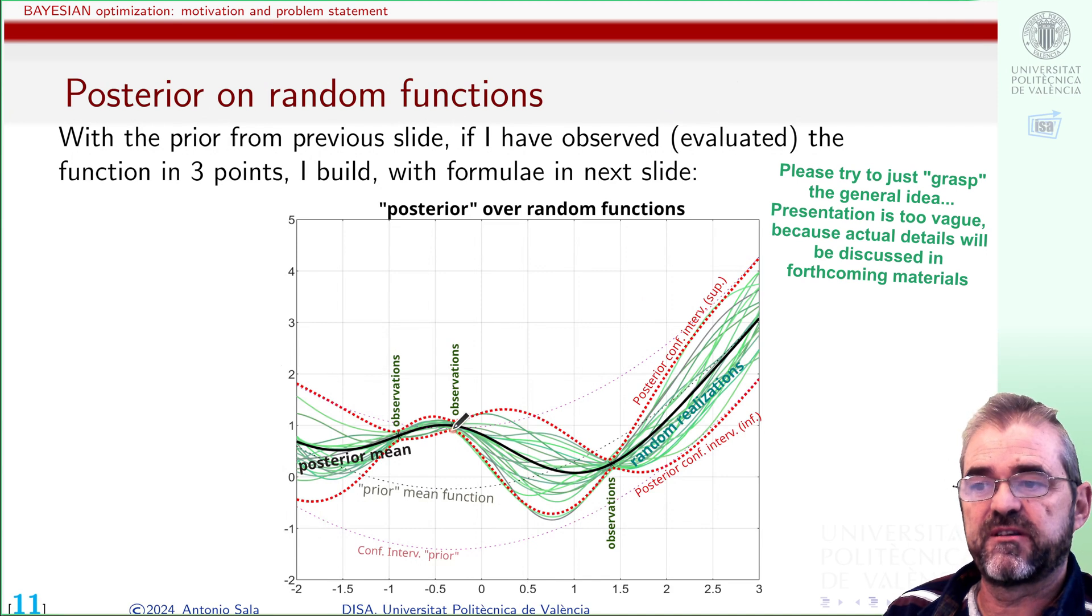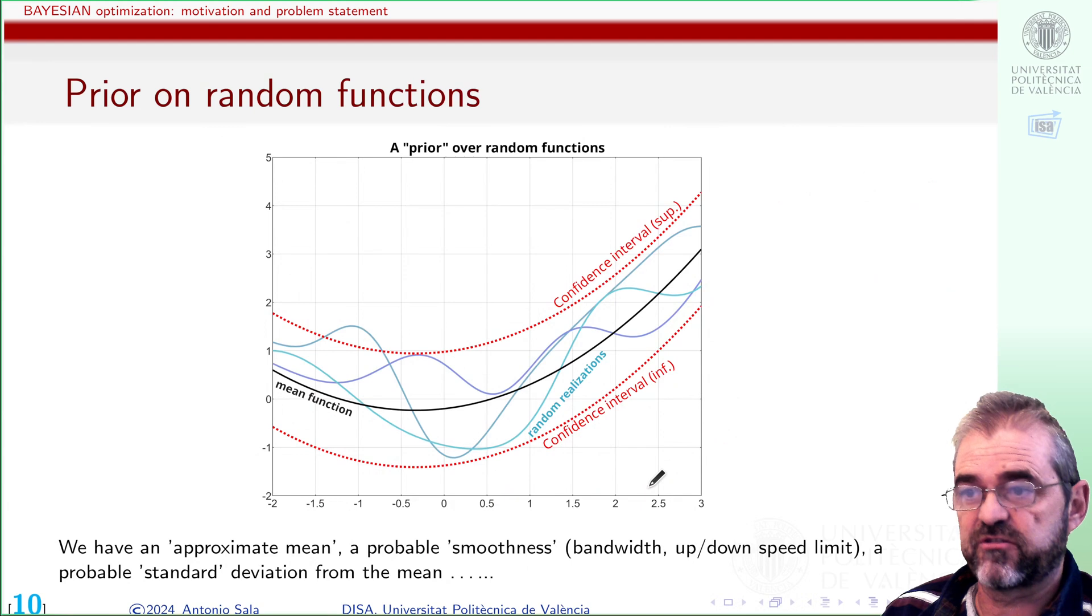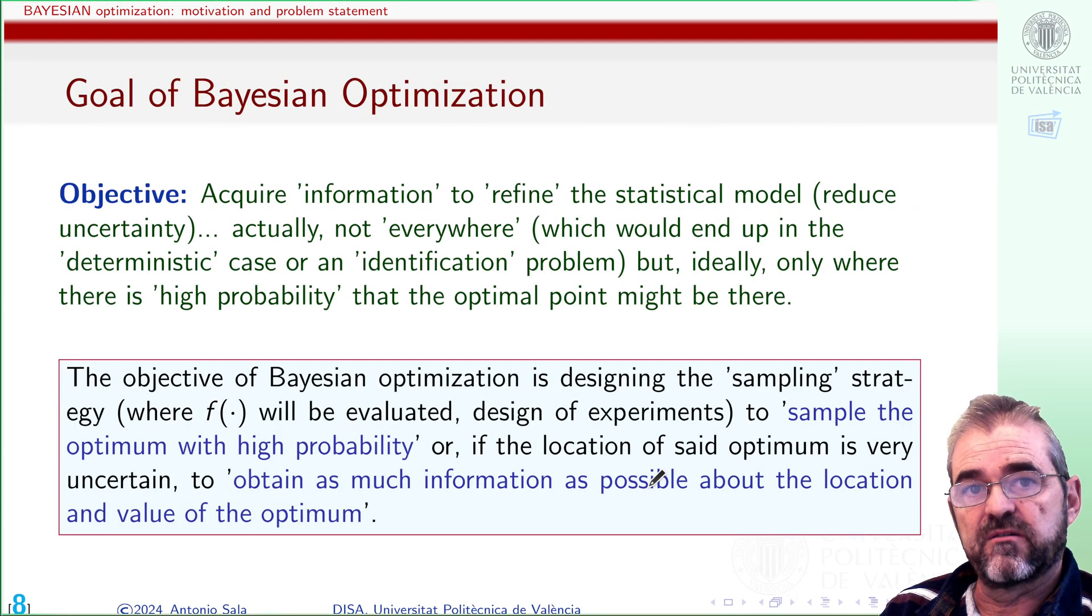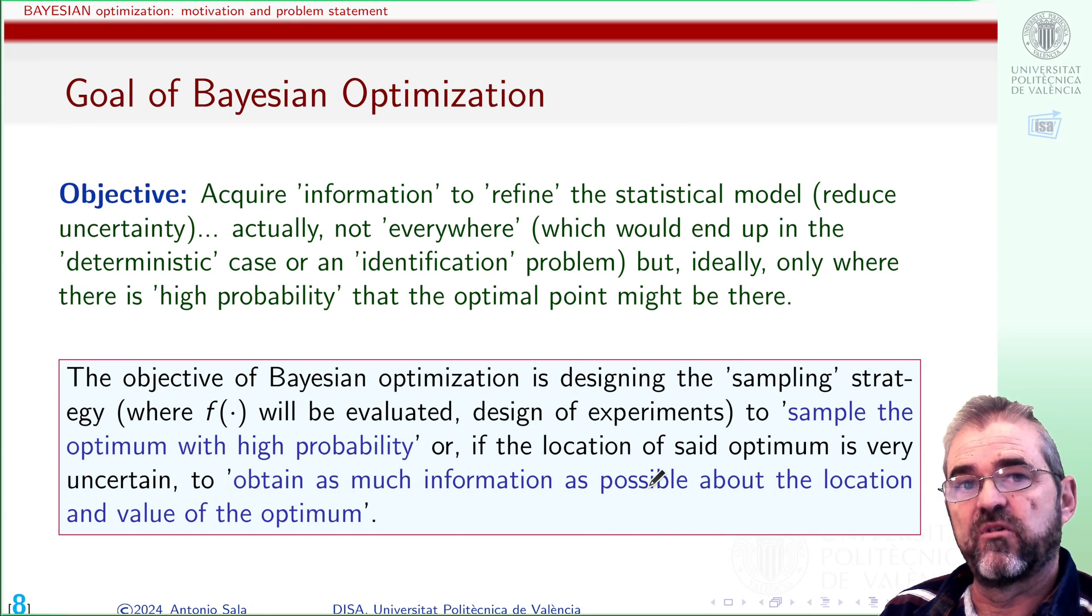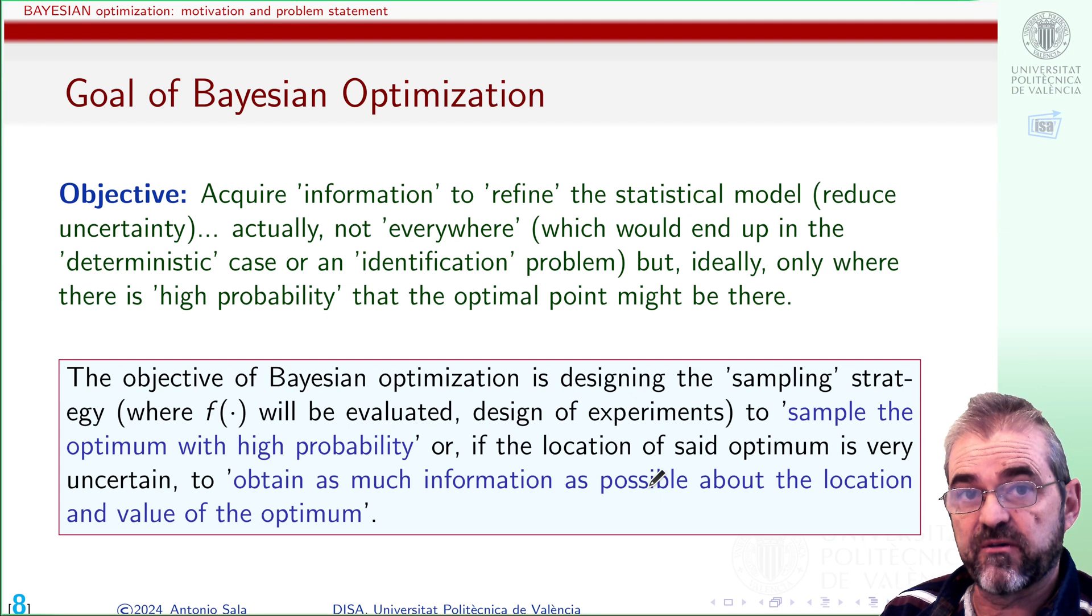So it samples here and here and then as they were above the mean I was unlucky so third sample is over here. So with this kind of discussions of course and the right balance between exploitation, just sampling where I think the optimum will be, or exploration, acquiring information acquiring bits of entropy on the location of the optimal point is what guides the theoretical developments in Bayesian optimization.